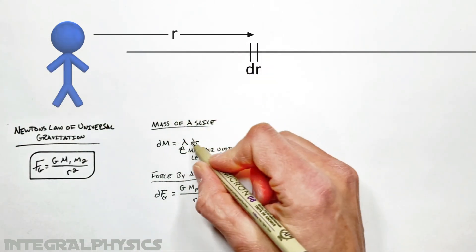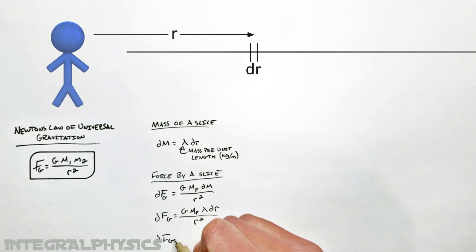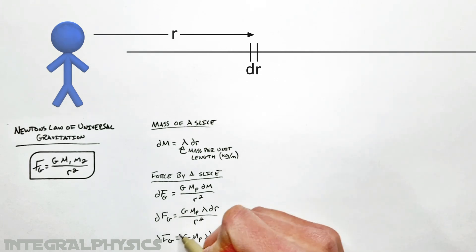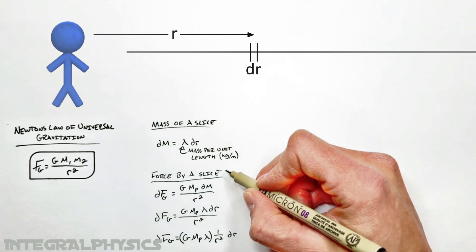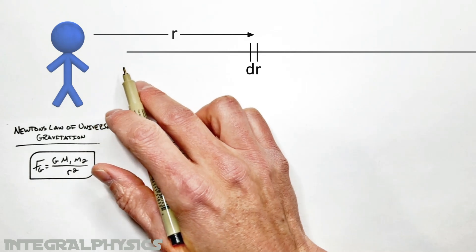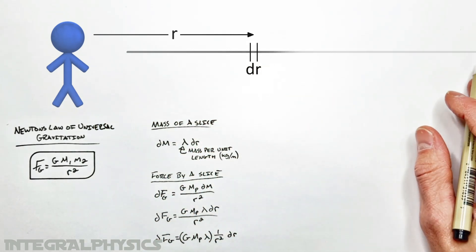So subbing this term in right here, we get this expression and realize everything over here is g, m, p, lambda. Those are just constants. Those are never going to change as we move along this rod. So now that we know the force by a single slice on this rod, all we're going to do is take a look at the force by each of these little slices along the entire rod added up.